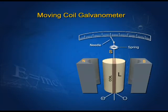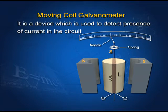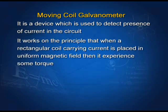Moving coil galvanometer: it is a device used to detect the presence of current in a circuit. It works on the principle that when a rectangular coil carrying current is placed in a uniform magnetic field, it experiences a torque.